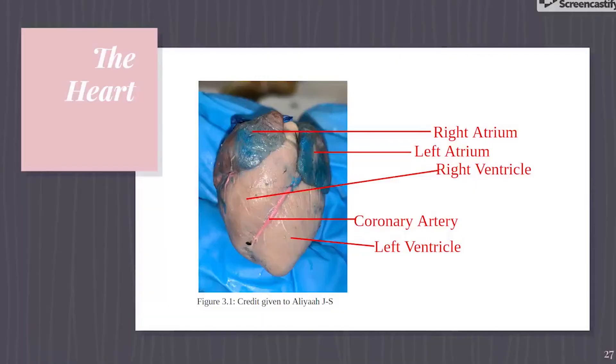The final system in a fetal pig is the circulatory system. The main function of this system is to transport blood and nutrients throughout the body of the pig. The circulatory system of the pig consists of the heart, arteries, veins, and capillaries. There are two parts to this system: the pulmonary circulation of blood to the lungs, and the systemic circulation of blood to the rest of the pig's body.